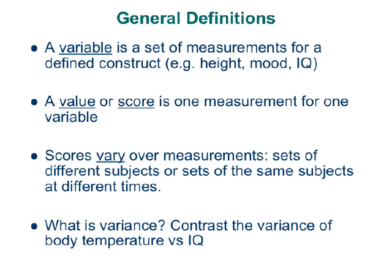Probably one of the most important things to understand in statistics is the concept of variance — the fact that scores vary over observations. If you can capture in your mind the concept of variance, you have half of what you need to understand all statistics. Statistics deals with variability: high scores and low scores, how to account for them, how to explain them, how to predict them, and what they mean. Variance is a very, very important concept that underlies all statistics.